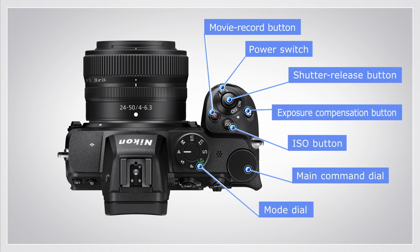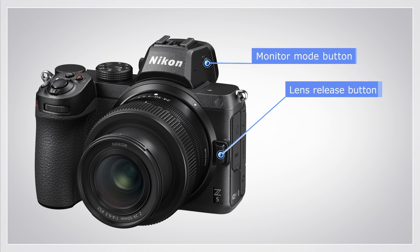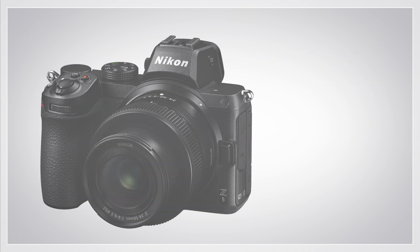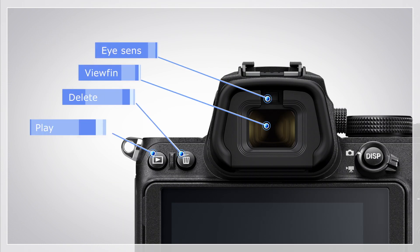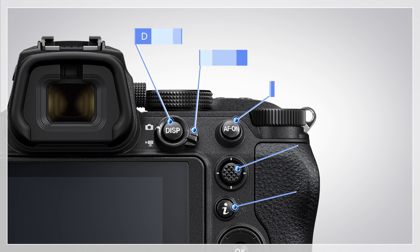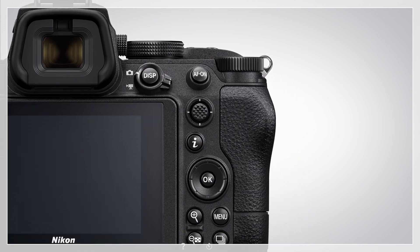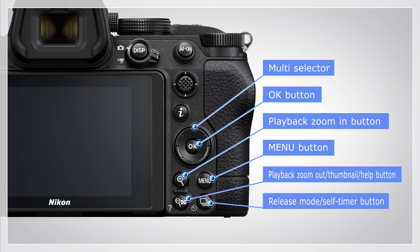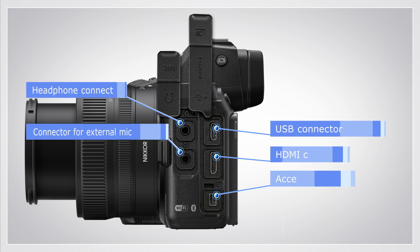These controls are found on the top of the camera. These controls are on the front. These controls are on the back. These connectors are on the side of the camera.